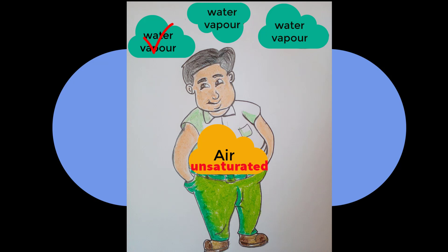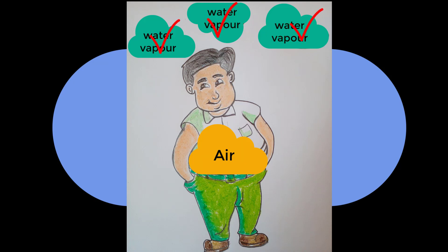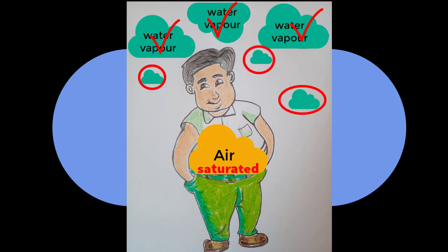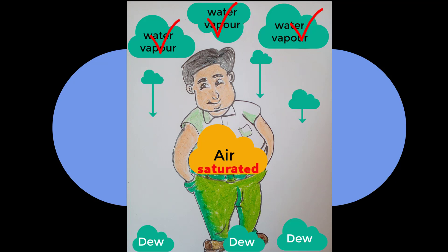When the air of a fixed place or closed container contains water vapor less than its maximum vapor-holding capacity, we call that air unsaturated with water vapor — it is not 100% satisfied. When the air contains the maximum amount of water vapor, we call it saturated — 100% satisfied. When saturated at a fixed temperature, the excess existing water vapor of that place falls down as dew.